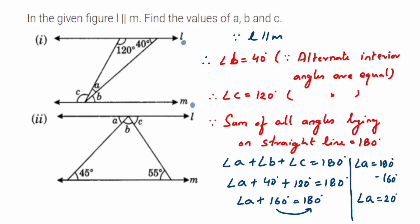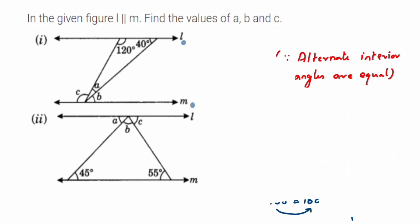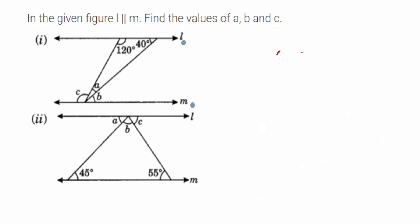Now we'll go to the second figure. It is almost similar to the first question but the figure is a bit different. Again l and m are parallel lines and we have to find angles a, b, and c. Two angles given are 45 and 55 degrees.